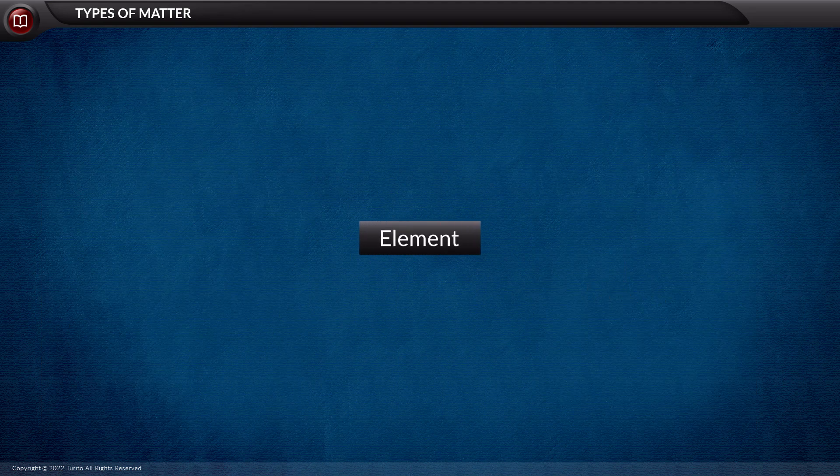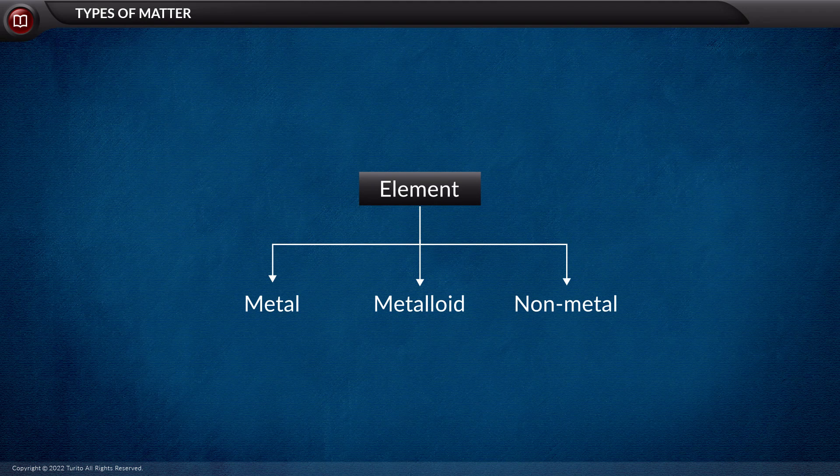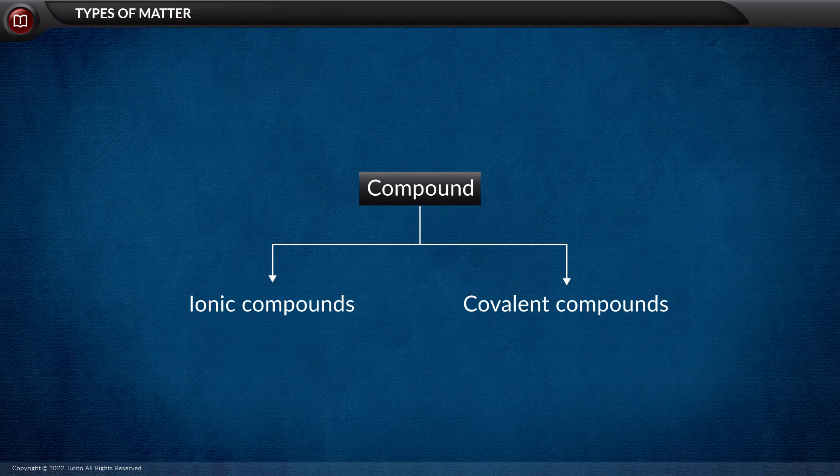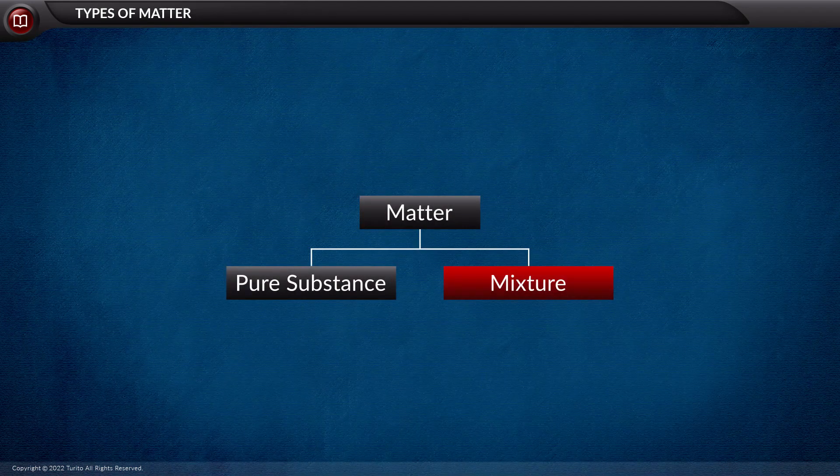The element is further divided into metal, metalloid, and non-metal. On the other hand, compounds are divided into ionic and covalent compounds. Next type of matter which we must discuss is mixture.